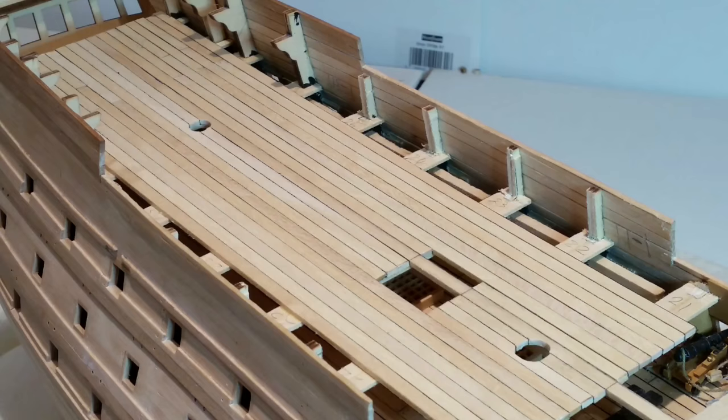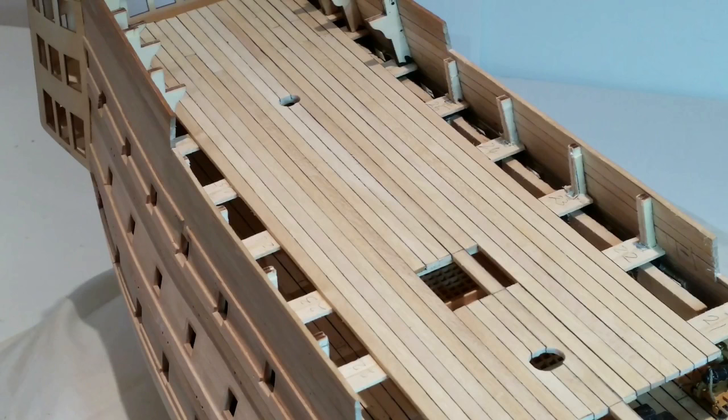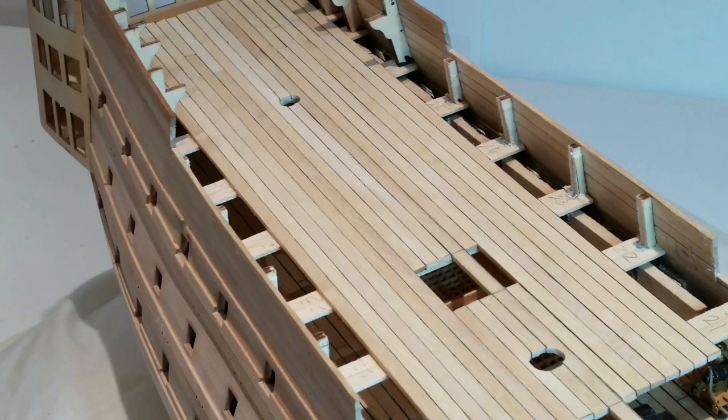Add another 6 planks each side running from the end of the large opening to the stern. Then add a further 15 strips of wood at the bow, so that you have a total of 17 planks with the center plank in the middle.